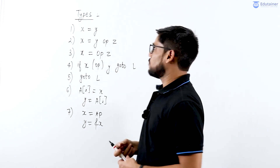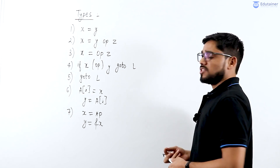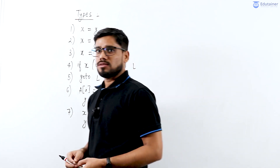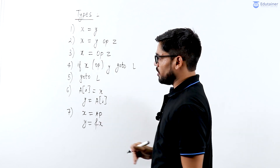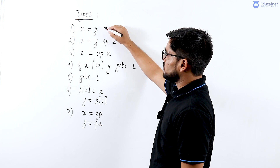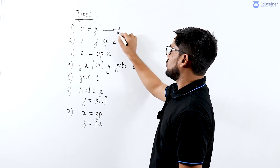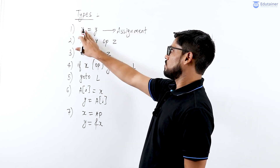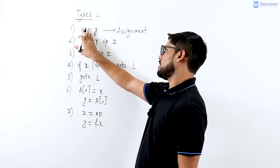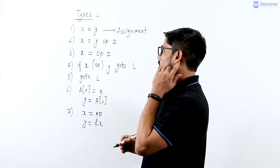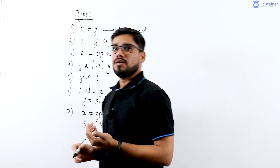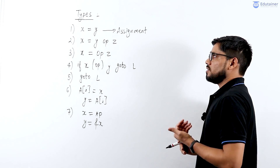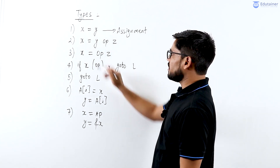Let's look at the types of operations supported in the intermediate code generation phase. It supports seven types of operations. The first operation is the assignment operation — on the left side one variable is present, on the right side another variable is present, and the right side variable contains some value which gets assigned to the variable on the left hand side. This is the simplest operation supported in the intermediate code generation phase.